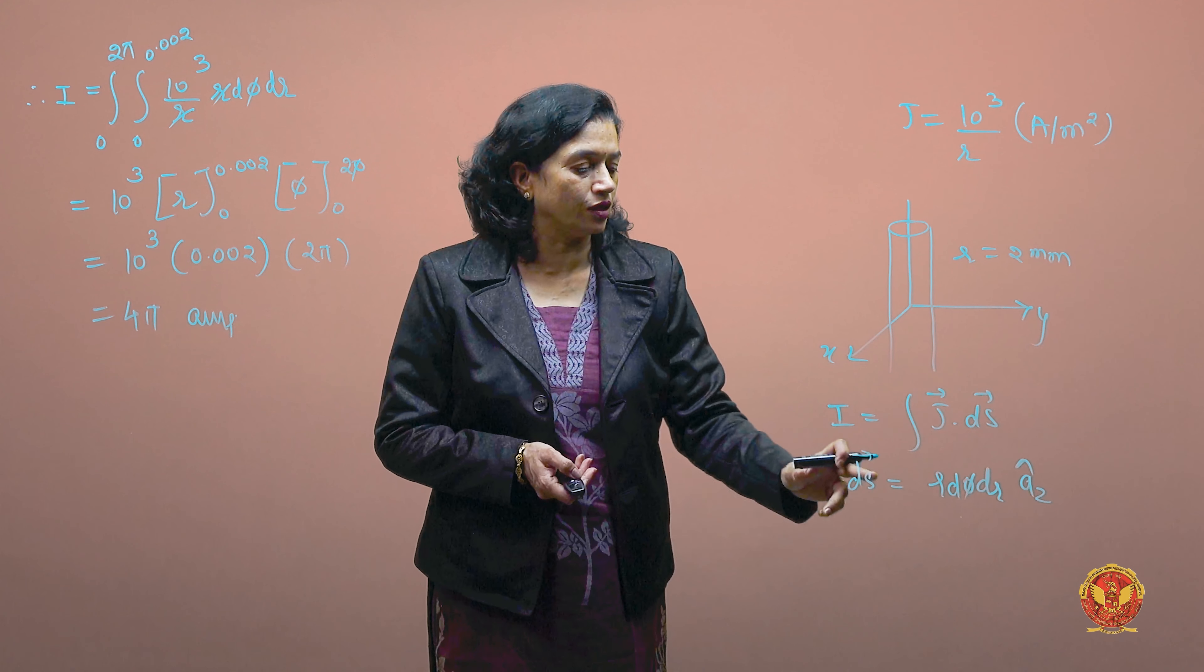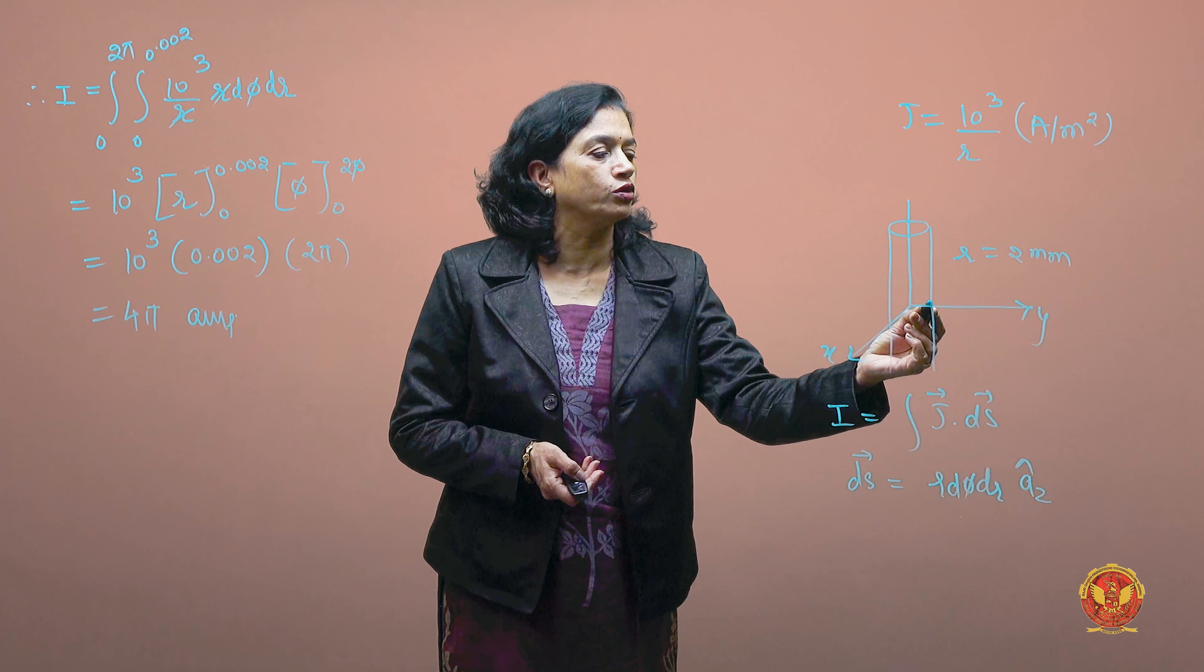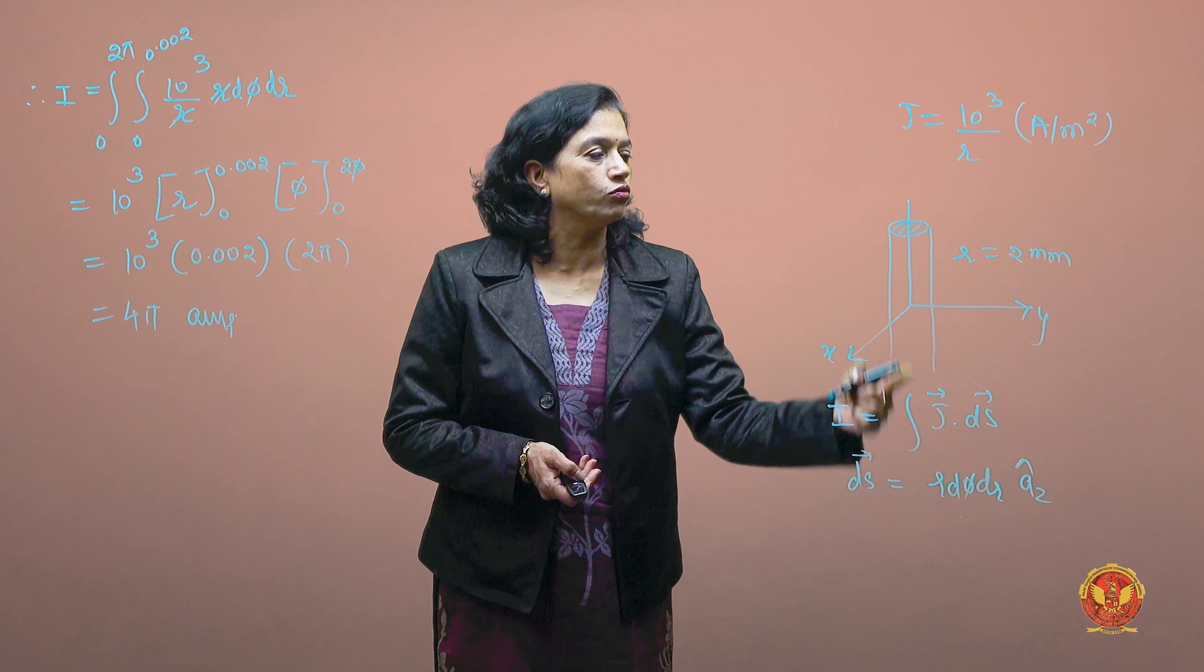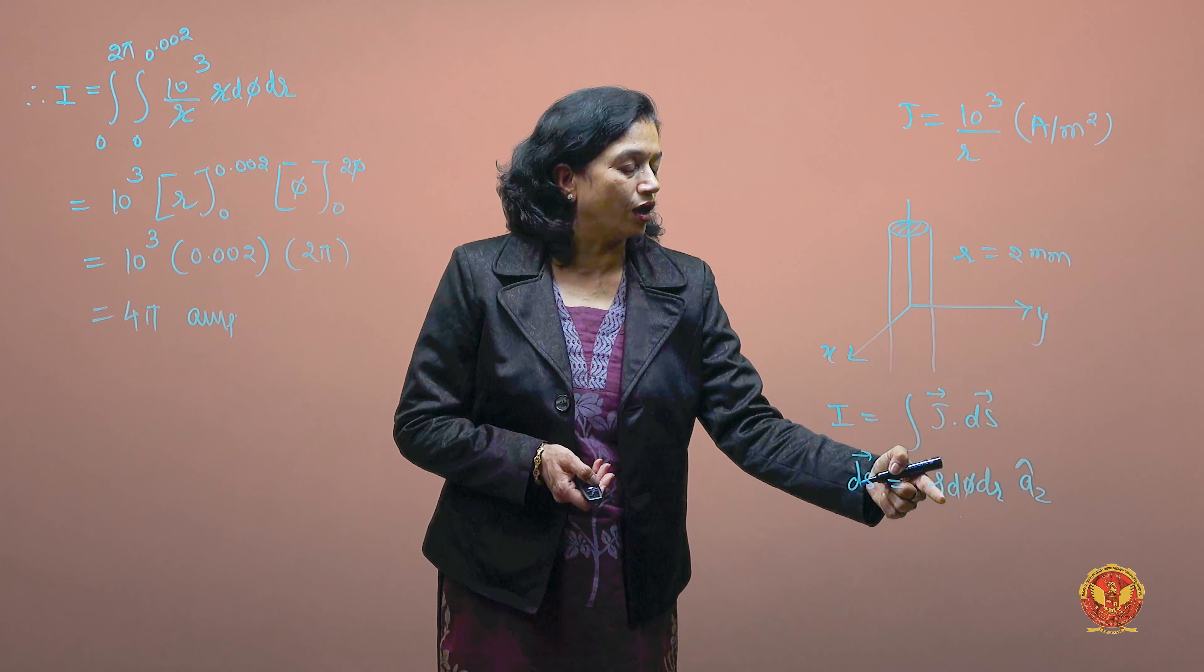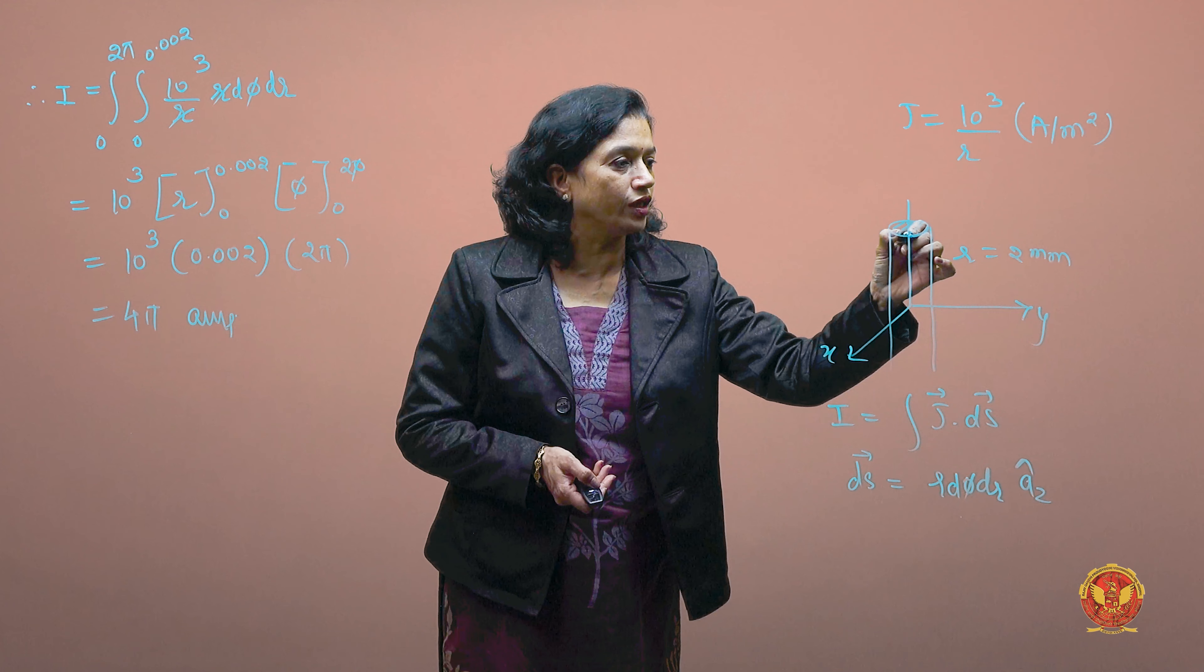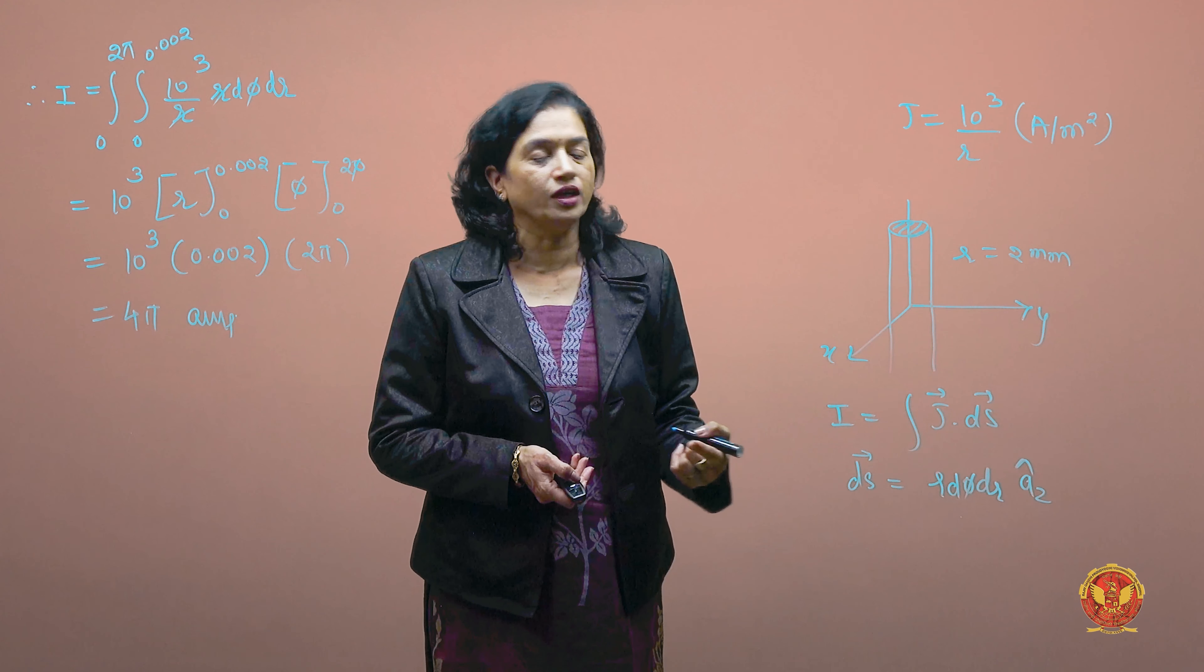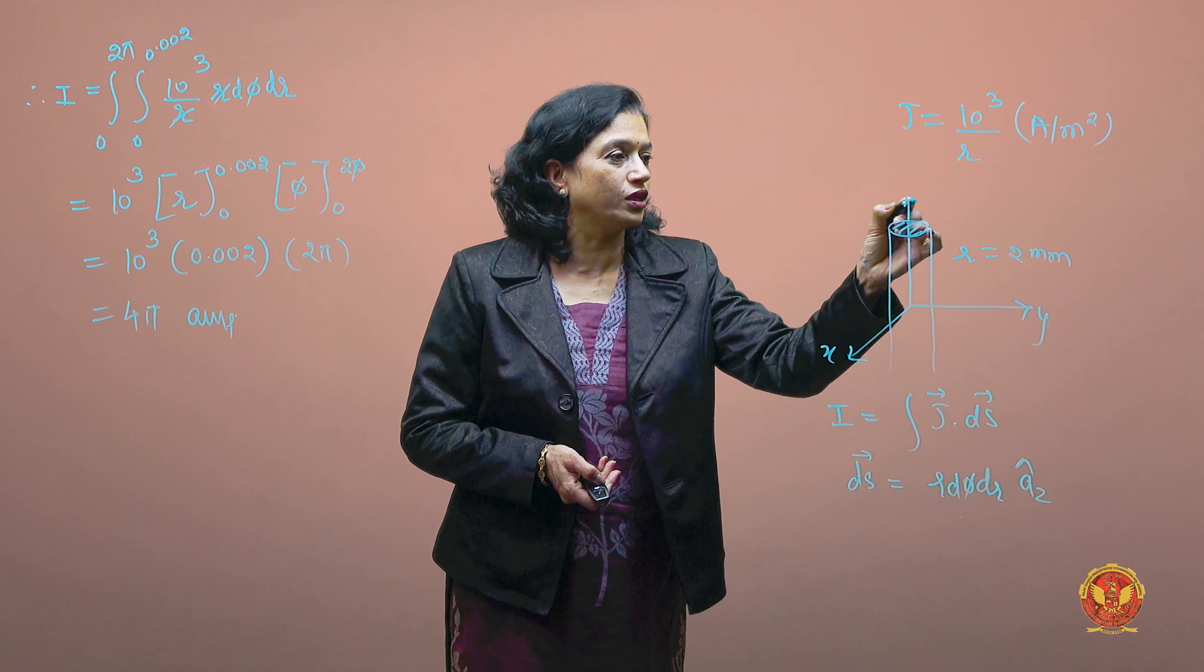To find the total current, we need to integrate J·ds. We can define this cross section as r dφ dr, where r dφ is the arc length and dr is the radial variation. The direction will be z, so ds is defined in the z direction.